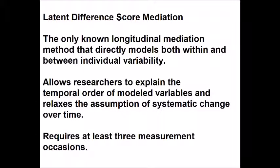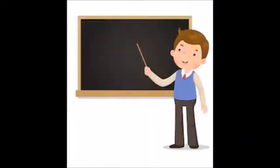The third type is latent difference score mediation. It is the only known longitudinal mediation method that directly models both within-individual and between-individual variability. It allows researchers to explain the temporal precedence of modeled variables and relaxes the assumption of systematic change over time. It requires at least three measurement occasions.